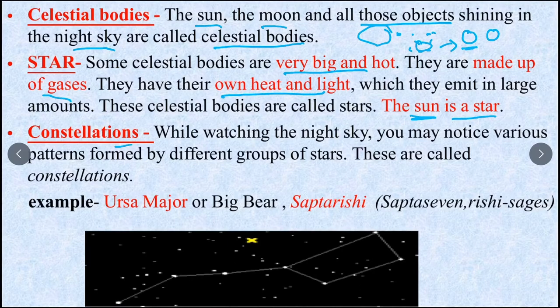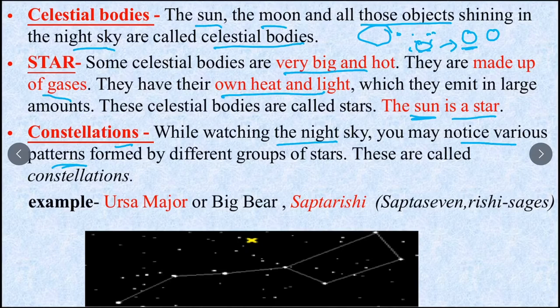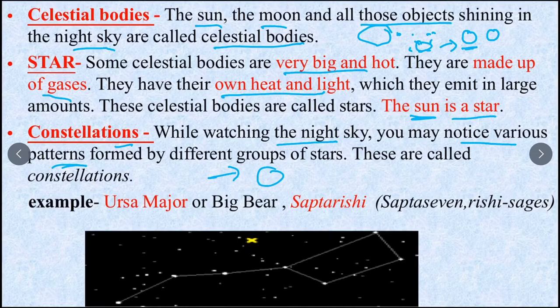Constellations - While watching the night sky, you may notice various patterns formed by different groups of stars. These are called constellations. Example - Ursa Major or Big Bear, Saptarishi. This is the example because it has 7 stars. This pattern which we call constellation.